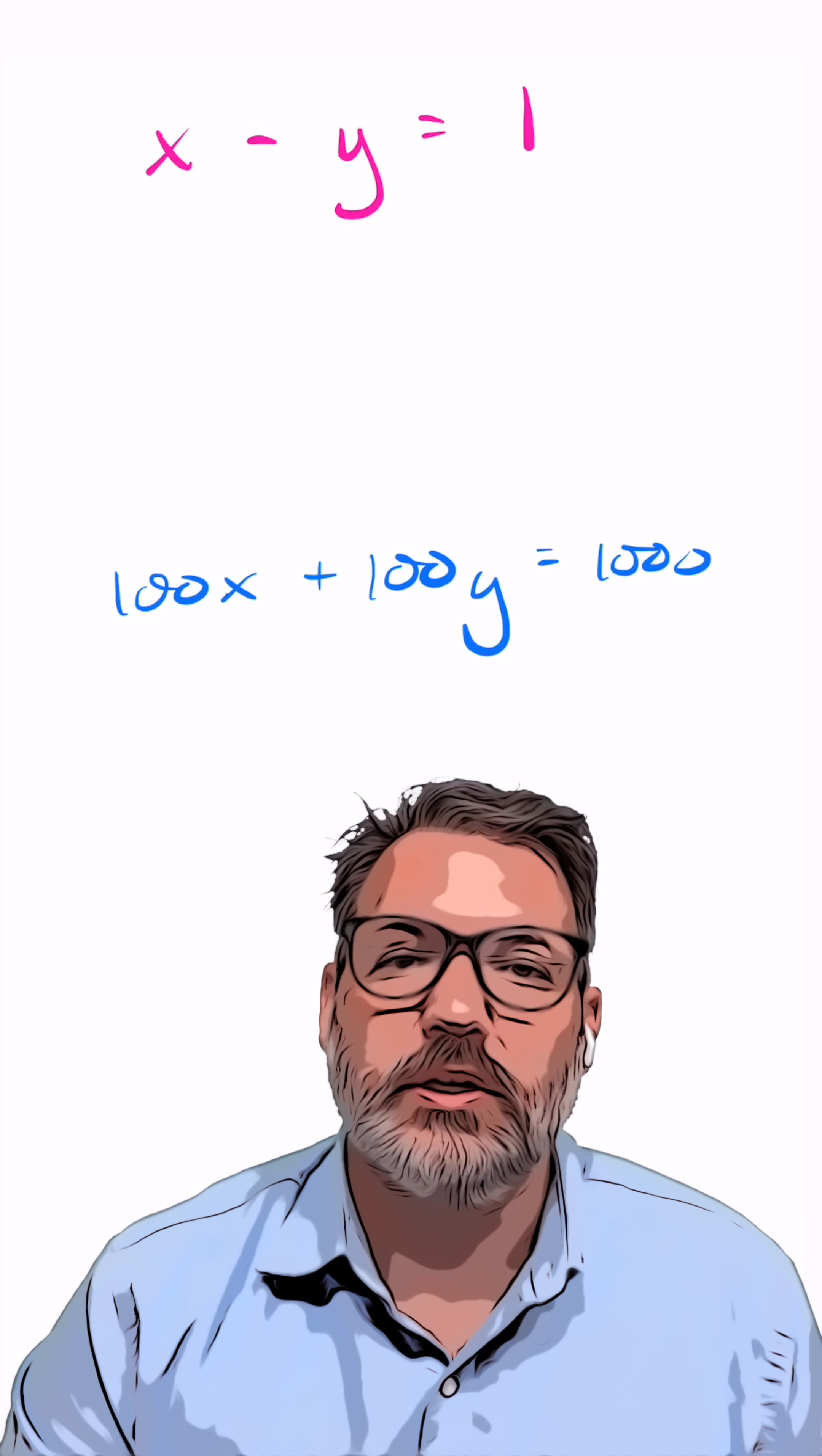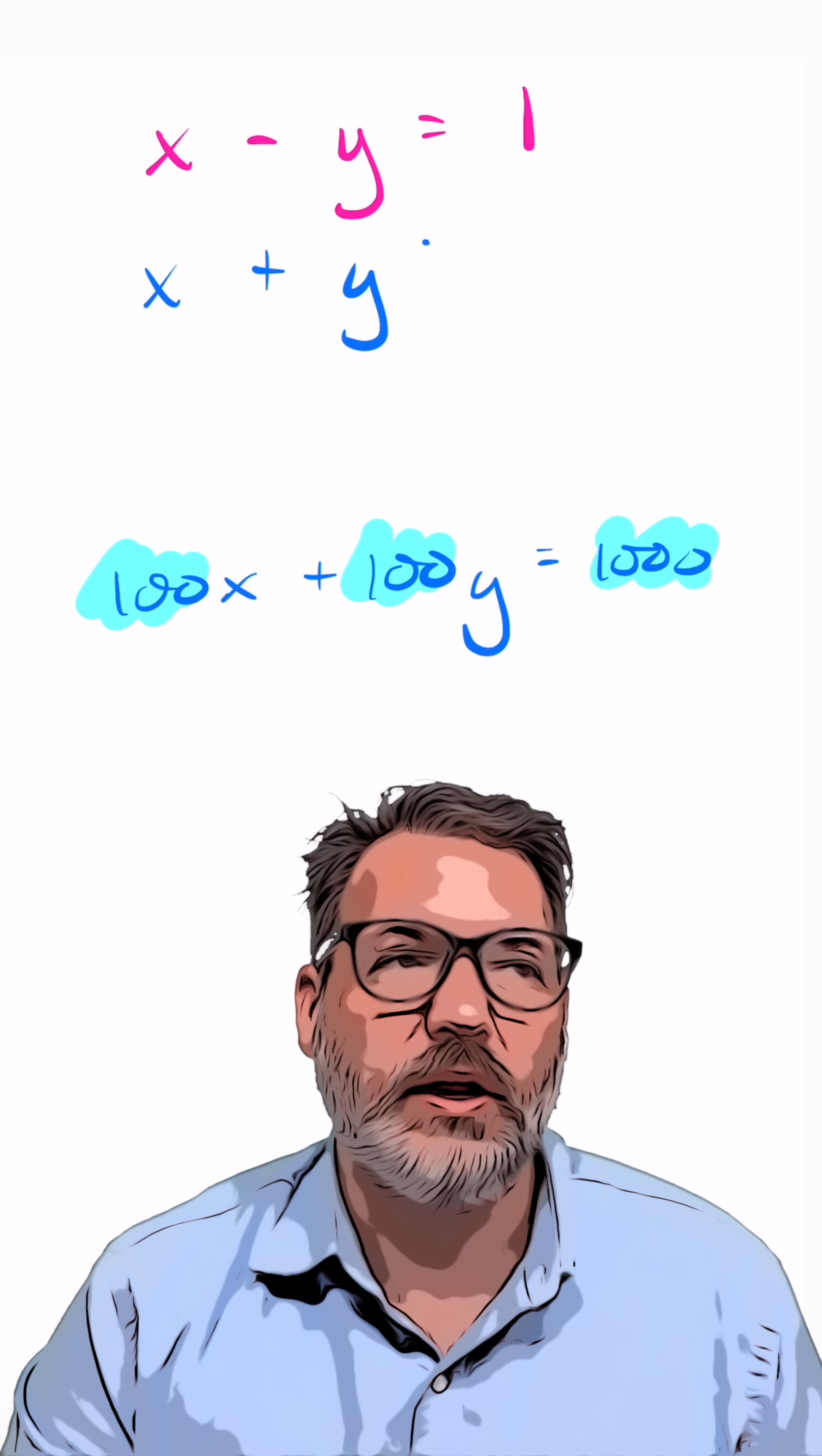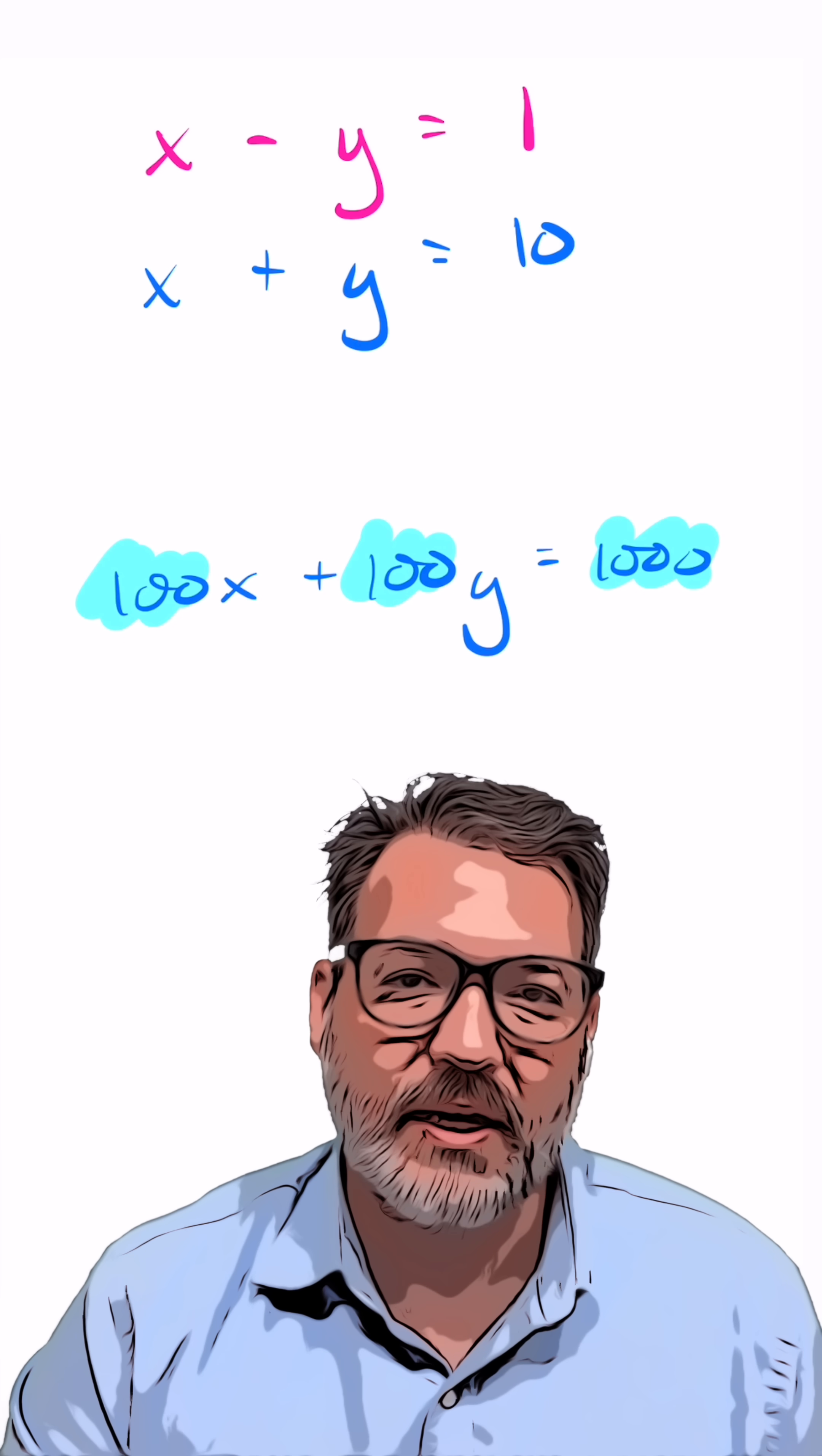For that matter, in the second equation, I also notice a common factor. 100, 100, and 1,000 are all divisible by 100. And so if I factor that 100 out, I get 1 single x plus 1 single y equals 10, since 100 goes into 1,000 10 times.